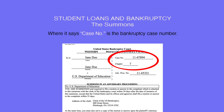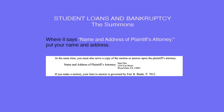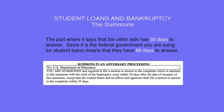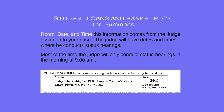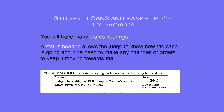At the top where it says Case Number, enter the bankruptcy case number. The part that says name and address of plaintiff's attorney — put your name and address. The part where it says the other side has 35 days to answer: since it's the federal government you are suing for student loans, they actually have 60 days to answer — the clerk will correct this part. The part that says room, date, and time comes from the judge assigned to your case. The judge will have dates and times where he conducts status hearings, usually in the morning at 9 a.m. A status hearing allows the judge to know how the case is going and if he needs to make any changes or orders to keep moving towards trial.